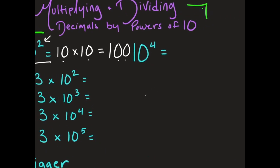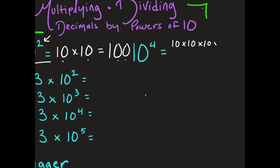Moving to the next problem, we have 10 to the fourth power, which is really 10 times 10 times 10 times 10 — four of them. When I multiply those together, I have four zeros, which is 10,000. Again, the amount of zeros is the same number as our exponent.